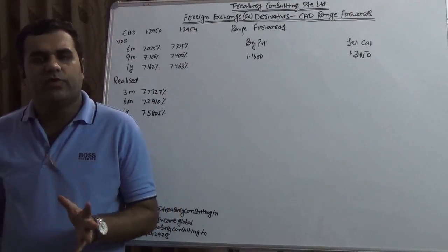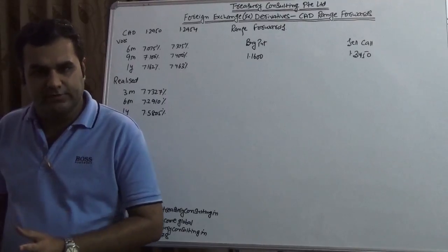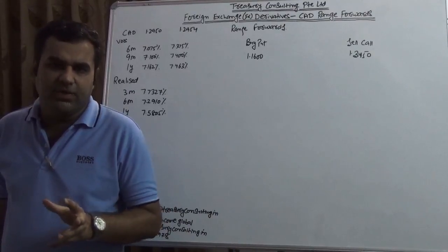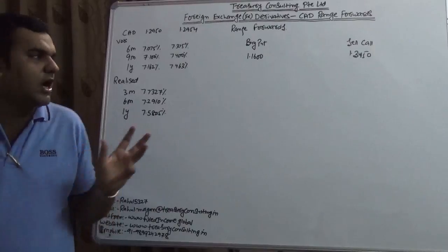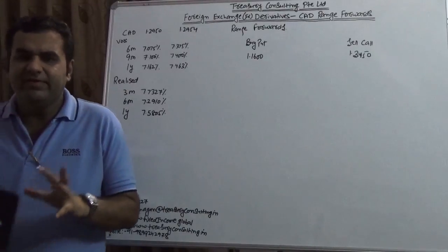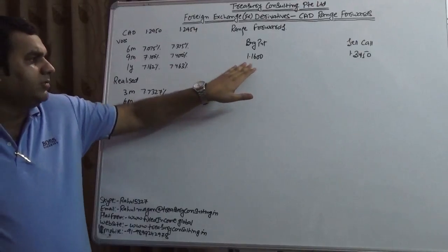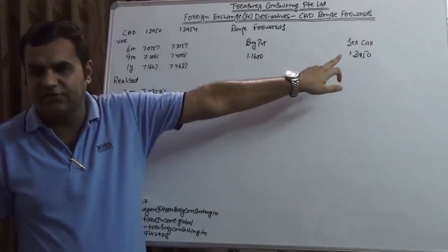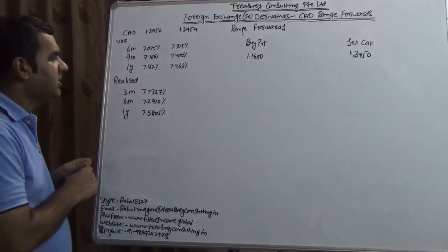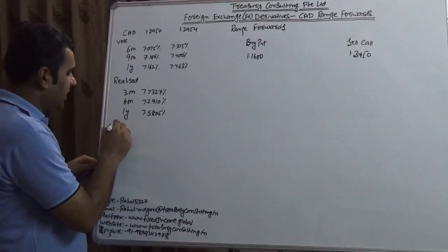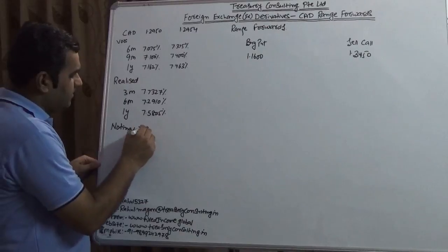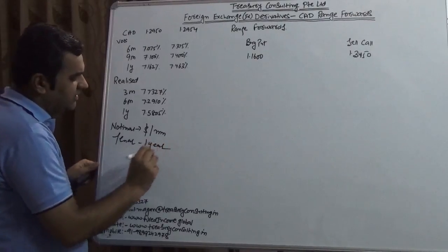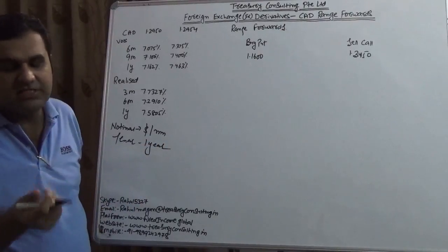Today we are covering a range forward for an export point of view, how a Canadian exporter who is basically exporting in dollar, on the contrary his functional currency is CAD, how he can take his positions in the market. This is how he would be able to take his position. While we did our option calculators, we got to know that the buy put and sell call, which is nothing but range forward exporter, fits out 1.16 to 1.34. We assume the notional is one million and tenor of the deal is one year.